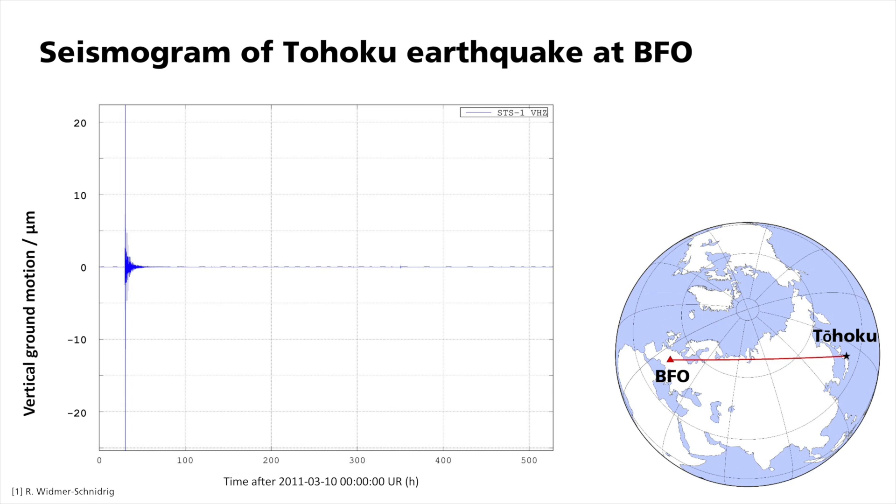Seismic waves from the Great Tohoku earthquake on March 11, 2011 were detected all over the globe. Even ten days after the devastating event, ground motion was still measurable.